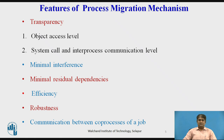Efficiency is another major issue in implementing process migration. The main sources of inefficiency involved with process migration are: the time required for migrating a process, the cost of locating an object including the migrating process, and the cost of supporting remote execution once the process is migrated. All these costs should be kept to a minimum as practicable.